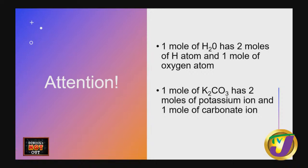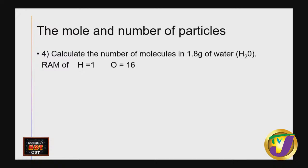One mole of water (H₂O) has two moles of hydrogen atoms and one mole of oxygen atoms, because the formula shows two H and one O. Similarly, one mole of potassium carbonate (K₂CO₃) has two moles of potassium ions and one mole of carbonate ions. This detail is important and can become very significant later.